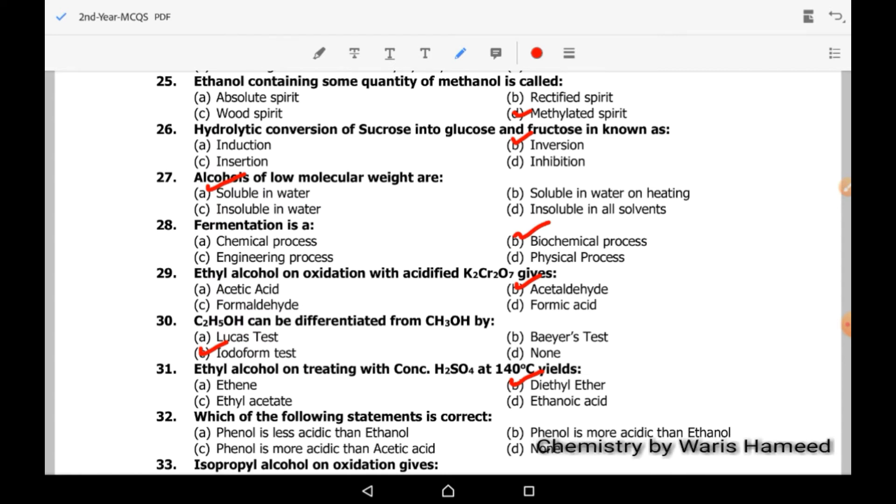Which of the following statement is correct? Phenol is more acidic than ethanol. Option B is correct. Phenol is more acidic than ethanol and less acidic than carboxylic acid.